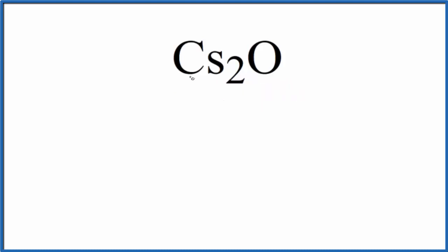So we have a metal here, the cesium, and oxygen, a non-metal. We're going to treat this as an ionic compound. So we'll put our oxygen right here, and let's put a Cs on either side.